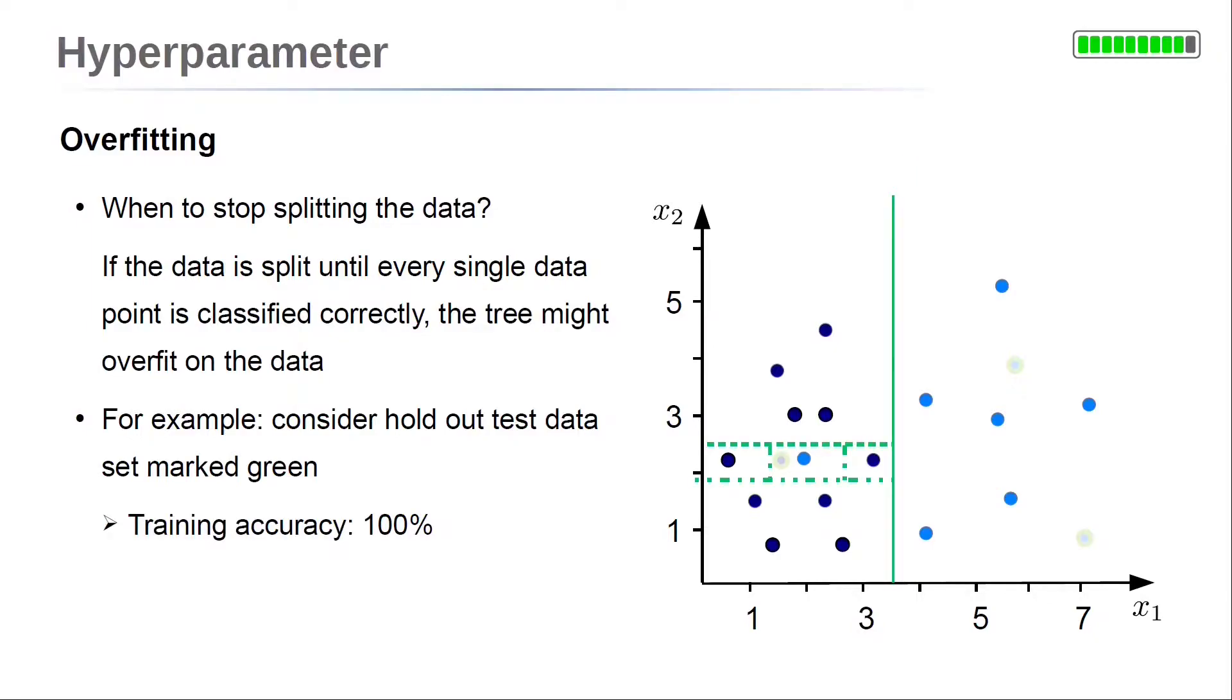Now, if some more splits are performed, even the single outlier is isolated. This leads to a training accuracy of 100%, so every data point of the training data is classified correctly. On the test data, the data points on the right are classified correctly as well. However, data points near the outlier are classified incorrectly.